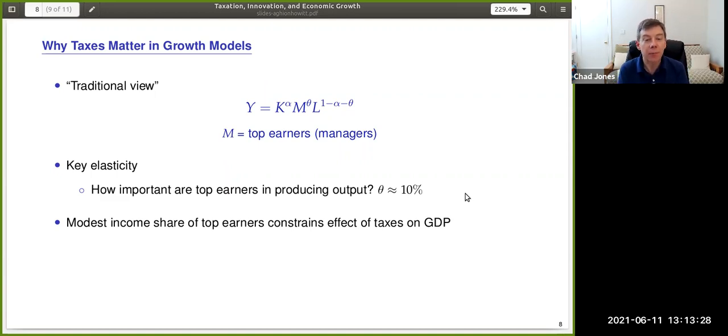It depends on how important are top earners in producing output. And there there's this interesting constraint that we think that the top income earner share of GDP is something on the order of 10%. Well, this modest share constrains the effects of taxes on GDP. It has to pass through this 0.1 elasticity. And so it's going to get dampened quite considerably.